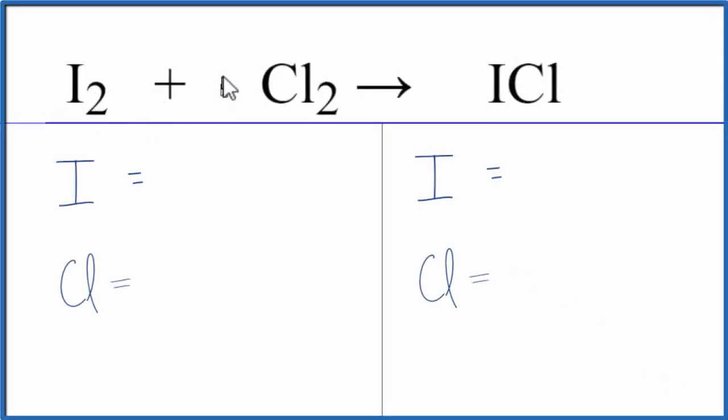To balance this equation, I2 plus Cl2 yields ICl, we need to count the atoms up on both sides of the equation.